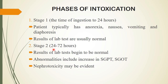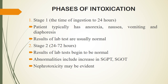Stage 2 occurs between 24 to 72 hours. Laboratory tests begin to show abnormalities — increases in SGPT and SGOT levels occur as liver toxicity increases, and nephrotoxicity may also become evident. Stage 3, up to 3 to 4 days, is also known as the hepatic stage. Signs of hepatotoxicity occur; plasma ALT and AST levels are often more than 10,000 international units. The patient may have hypoglycemia, lactic acidosis, and death may occur, especially in older patients with comorbid conditions, due to multi-organ failure.